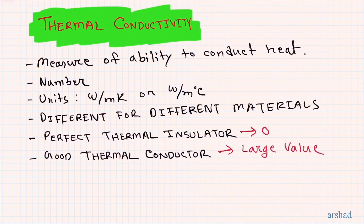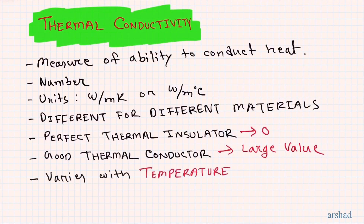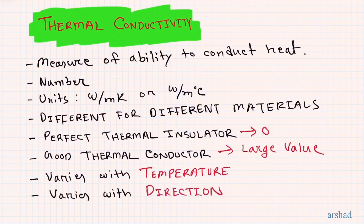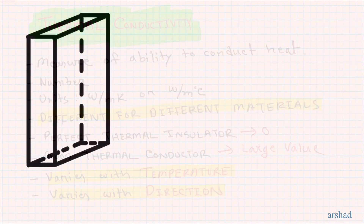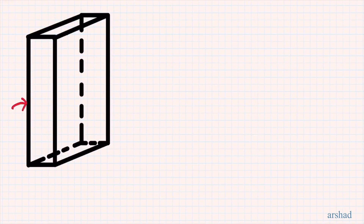For a good thermal conductor you expect it to have a large value, because more heat is going to be transferred through it. This parameter also varies with temperature, and in the same material it can be different in different directions. So for different materials, different temperatures, and different directions, thermal conductivity can vary quite significantly.